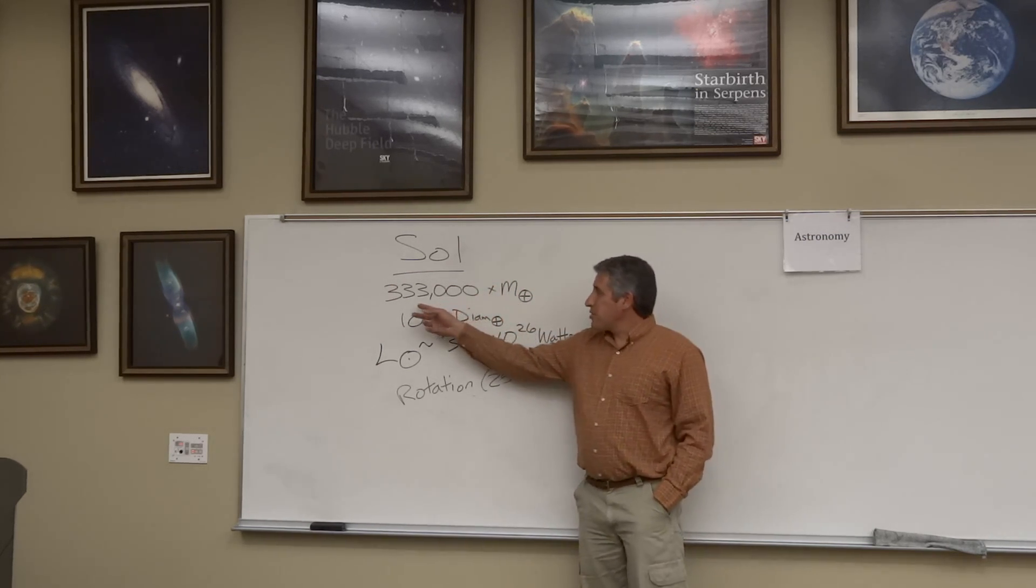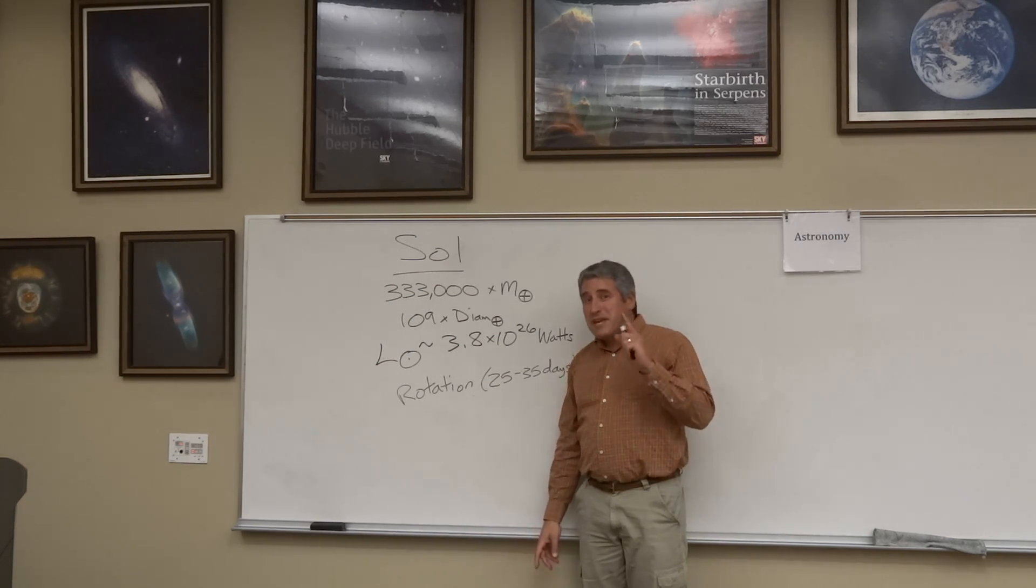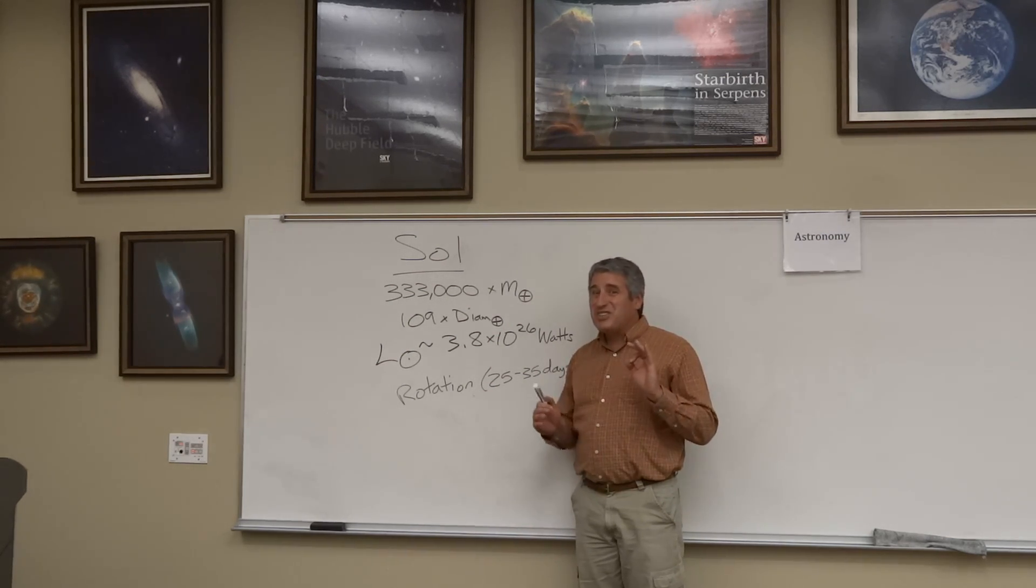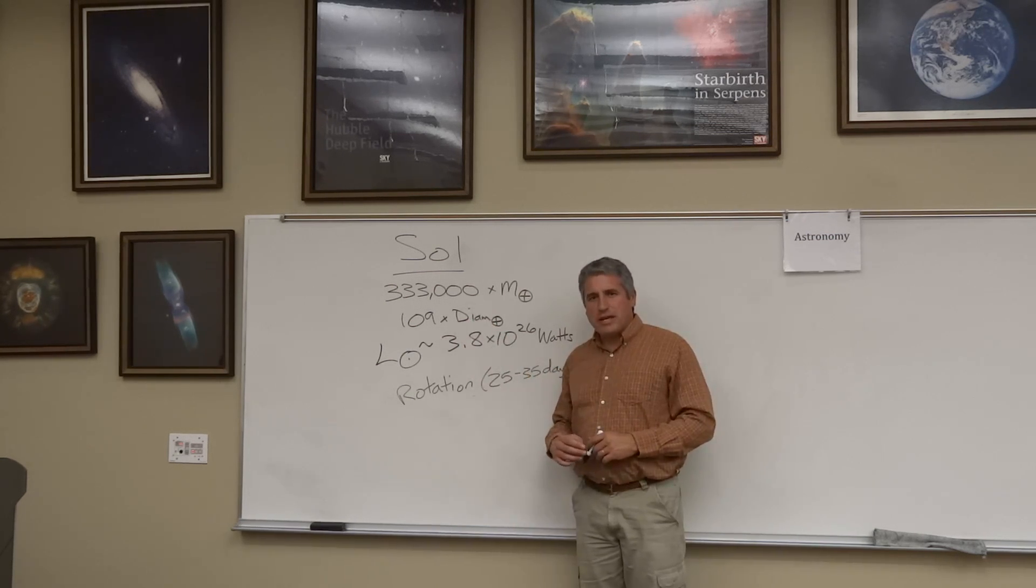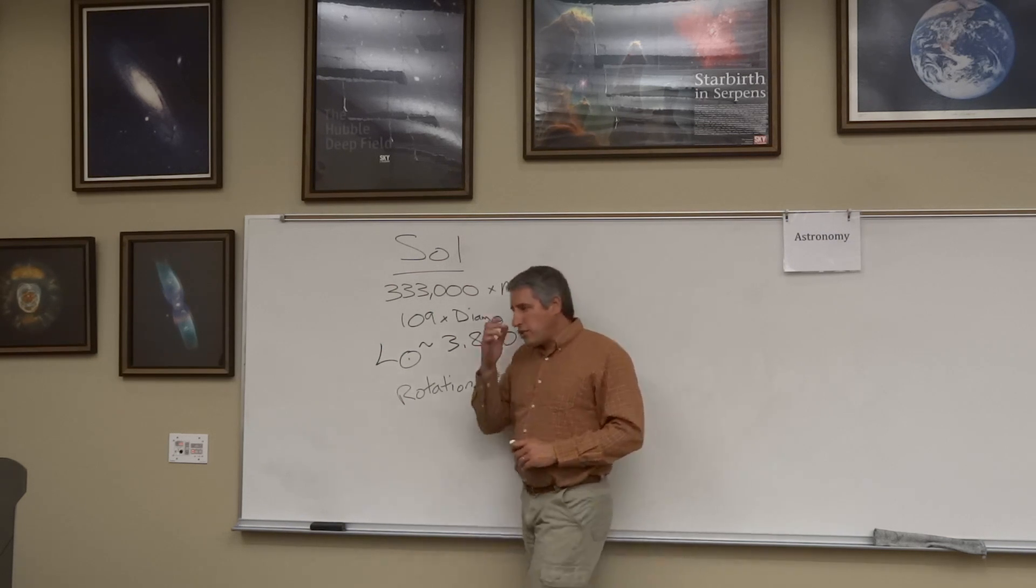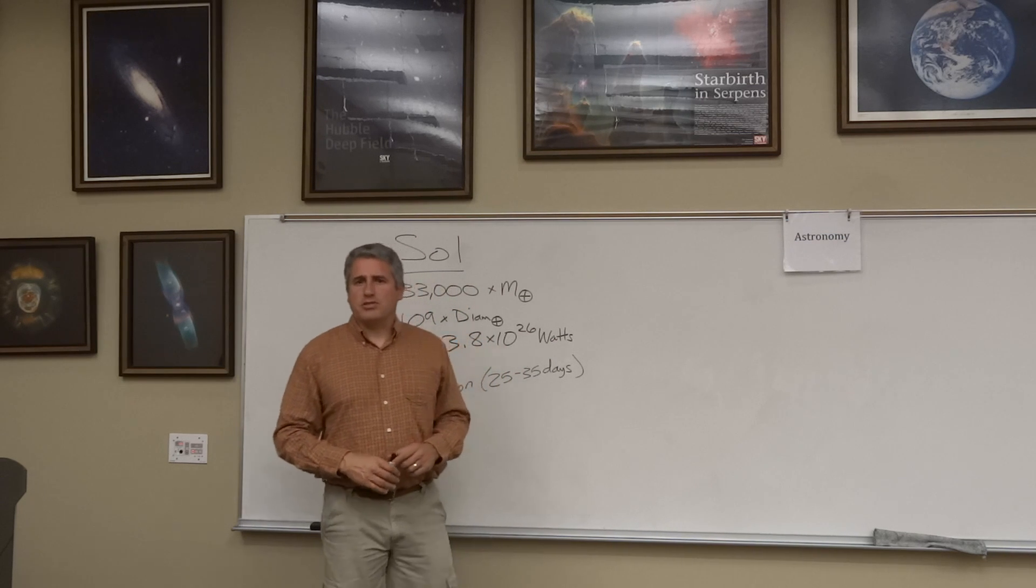Sol is a whopping 333,000 times the mass of the Earth. Remember, the biggest Jovian planet was 318 times the mass of the Earth. So the Sun is more than a thousand times more massive than Jupiter. In fact, the threshold to be a star is about 75 times larger than Jupiter.